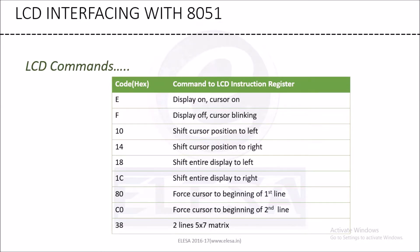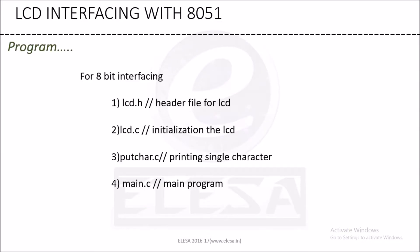Due to 0x80, the cursor will come to the first position of the first row, and due to 0xC0 the cursor will come to the first position of the second row. Next is writing the program. As 8051 does not have a built-in LCD library, we will develop an LCD library file. For 8-bit interfacing we require LCD.h — the header file for LCD — LCD.c for initializing the LCD, putchar.c for printing a single character on the LCD, and main.c as our main program.